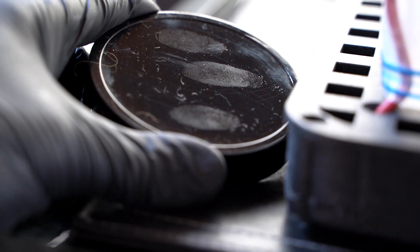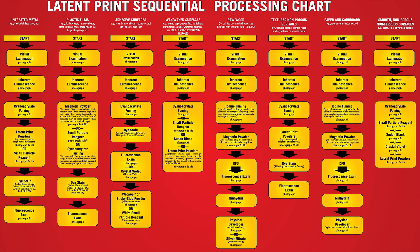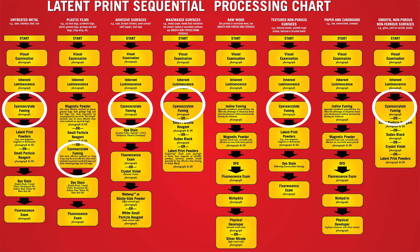Cyanoacrylate superglue fuming is a chemical method for the detection of latent fingerprints on non-porous surfaces such as plastic, glass, rubber, and varnished woods.